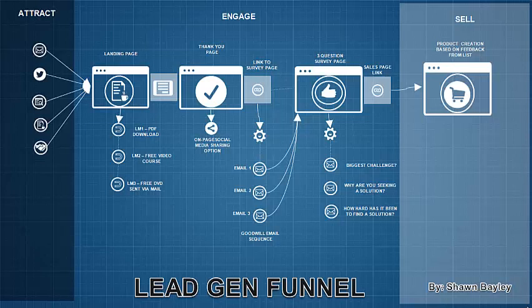Once you have that type of feedback, I've also got at least a three-email goodwill campaign. Once they've opted into my list, there's an automatic sequence — you should start with at least three emails. I have email campaigns that run for months, but start with at least something. Then, once that's done and you're ready to sell, I base my product creation on the feedback I've got from the people who filled out the survey.